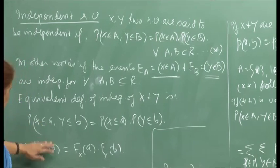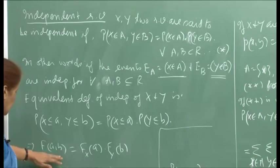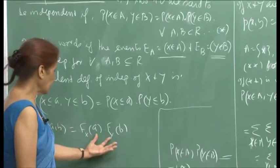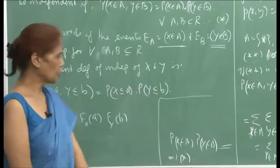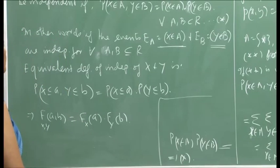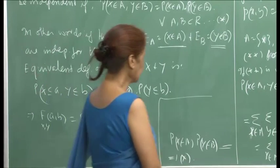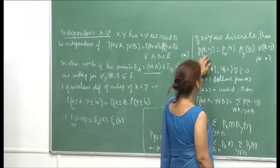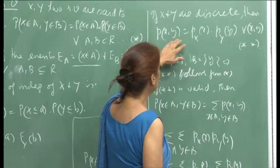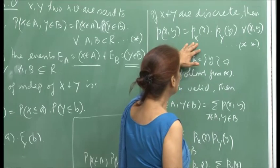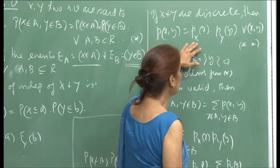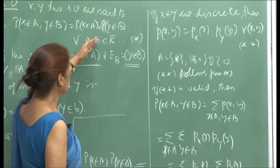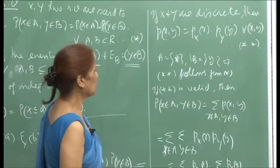This immediately implies that the joint cumulative distribution function can be written as a product of the individual cumulative distribution functions. If x and y are discrete, an equivalent way of writing independence is that p_{X,Y}(x, y) = p_X(x) · p_Y(y) for all x, y. This follows from the general definition by taking A and B as singleton sets, and conversely, if the joint PMF factors, one can recover the original definition by summing over A and B.